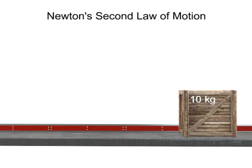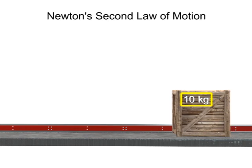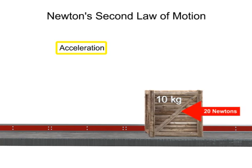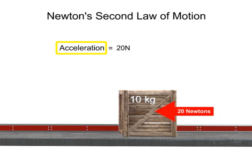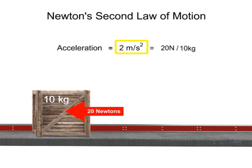Take, for instance, a scenario where you're pushing a 10-kilogram box along the ground with a force of 20 newtons. The acceleration of the box equals the force you exert divided by the mass of the box, or 2 meters per second squared.